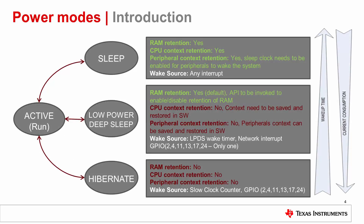This diagram showcases the features of each of these power modes along with the relative current consumption and wake up time. The arrows on the right depict two things: current consumption decreases from sleep to Hibernate, and conversely, wake up time increases from sleep to Hibernate. You can see how the retention of RAM, CPU, and peripheral contexts are affected by the various power modes and what wake up sources can be used.